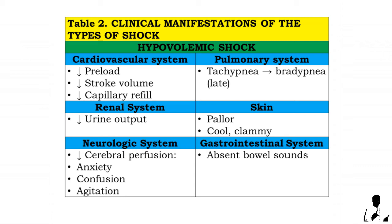Renal system: decreased urine output. Skin may be pallor, cool, and clammy. Neurologic system: decreased cerebral perfusion that may lead to anxiety, confusion, and agitation. Gastrointestinal system: absent bowel sounds.